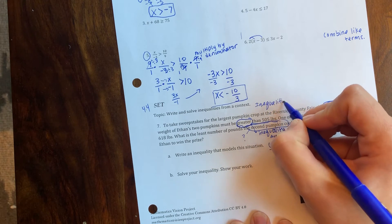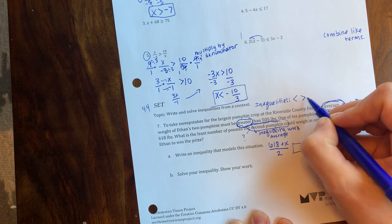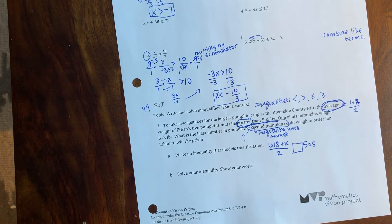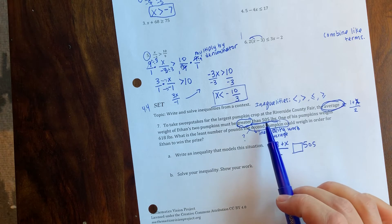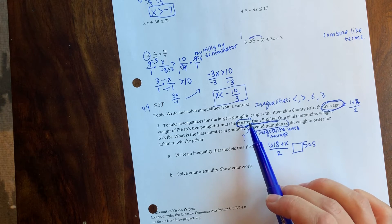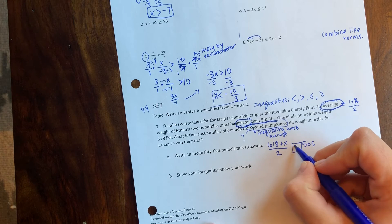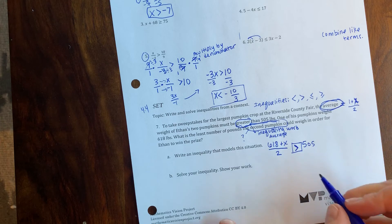Whenever you have inequality, you have the options: less than, greater than, less than or equal to, greater than or equal to. This doesn't say anything about equaling 505 pounds, it just has to be greater than. So whatever this average is, we open up to the bigger number. It has to be greater than. So that's our inequality. Now we want to solve that.